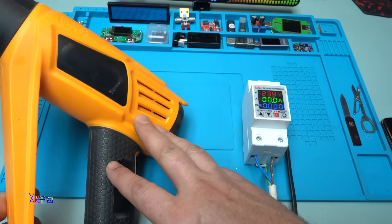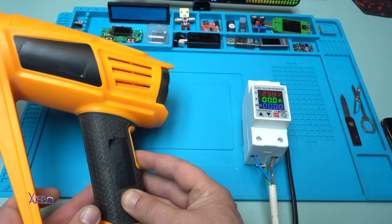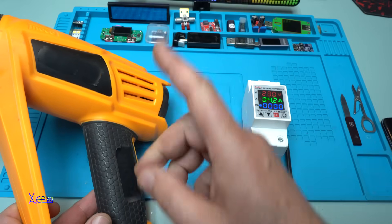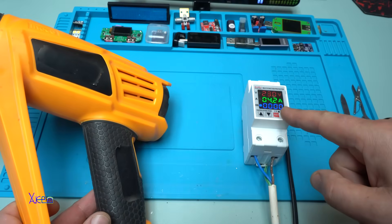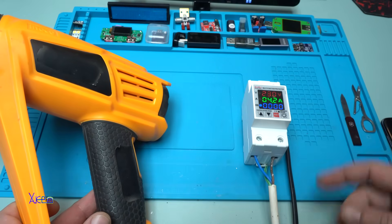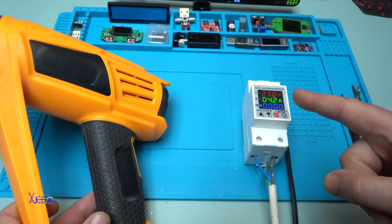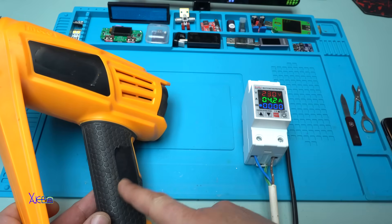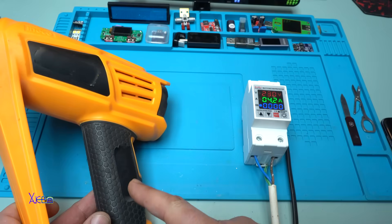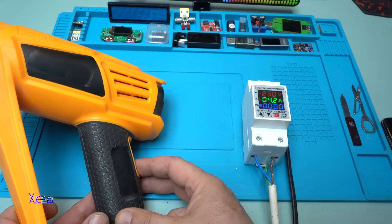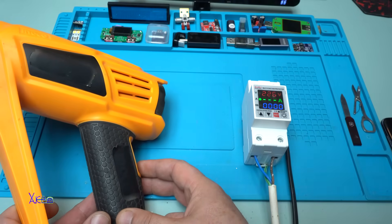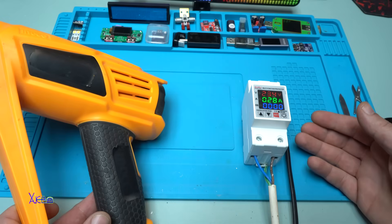Here I have a heat gun. I'm going to turn it on. And at first speed it pulls 4.2 amperes. But I set the protection over current protection at 7 amperes. And this heat gun at second speed it pulls 8 amperes. Take a look what will happen.